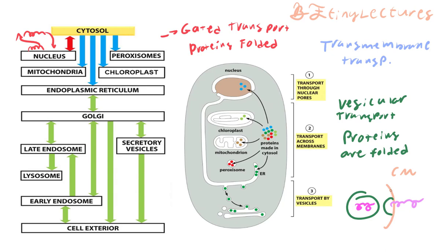For transmembrane transport, there are cases where the protein is folded and cases where it is unfolded, depending on the organelle. You can't say it's always folded or always unfolded — it's a combination. So for different organelles we have different folding states for the protein.